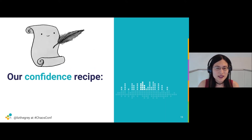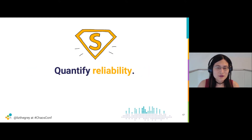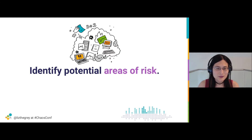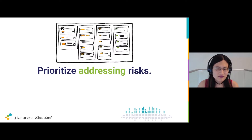Here's how we are confident in our stateful services' ability to survive chaos. We need both velocity in future development and reliability in the stability of our data platform. First, we need to quantify what reliability means — to develop an understanding of what good enough is, and to measure that quality of service. Second, we focused on identifying potential areas of risk. Third, we designed experiments to prove that risk and verify our assumptions — that the resiliency techniques we used would actually hold up in production. And finally, we closed that feedback loop by addressing the risks we found and solving the problems we encountered.